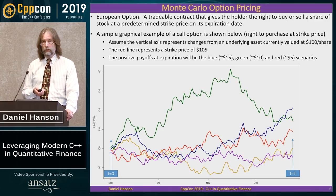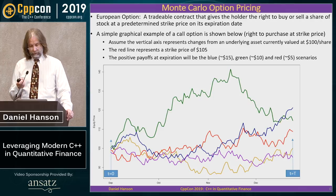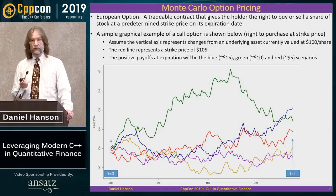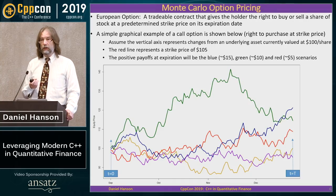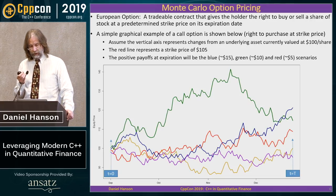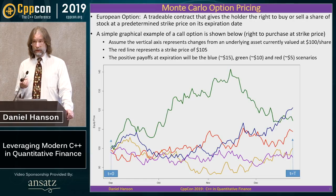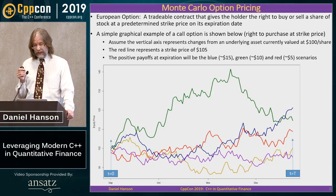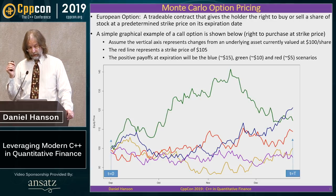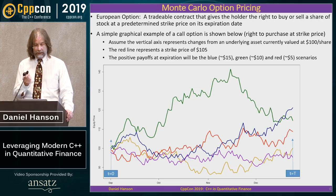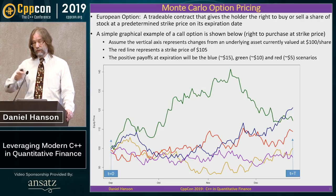In case you don't know what a European option is: it's a tradable contract that gives the holder the right to buy or sell a share of stock at a predetermined strike price in the future — specifically for European options, at the expiration date. Other types of options like American and Bermudan options allow exercise before expiration. Even though you can't exercise until the option expires, that option has value, and options themselves are traded. So we want to find a price for an option at the present time, even though the payoffs won't be until the future.